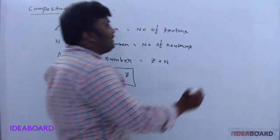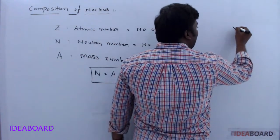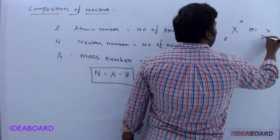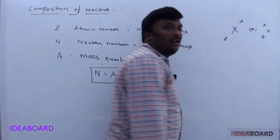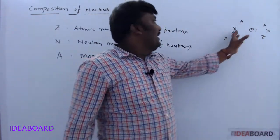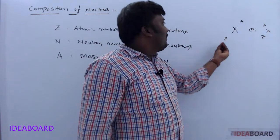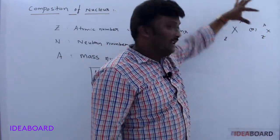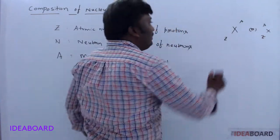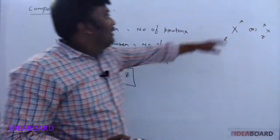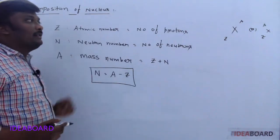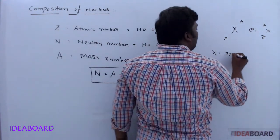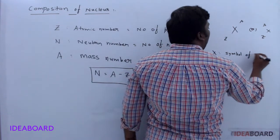The symbol for a nucleus is represented as X with Z at the bottom left and A at the top left — written as XZA. Here Z indicates the atomic number, A indicates the mass number, and X indicates the symbol of the chemical element.